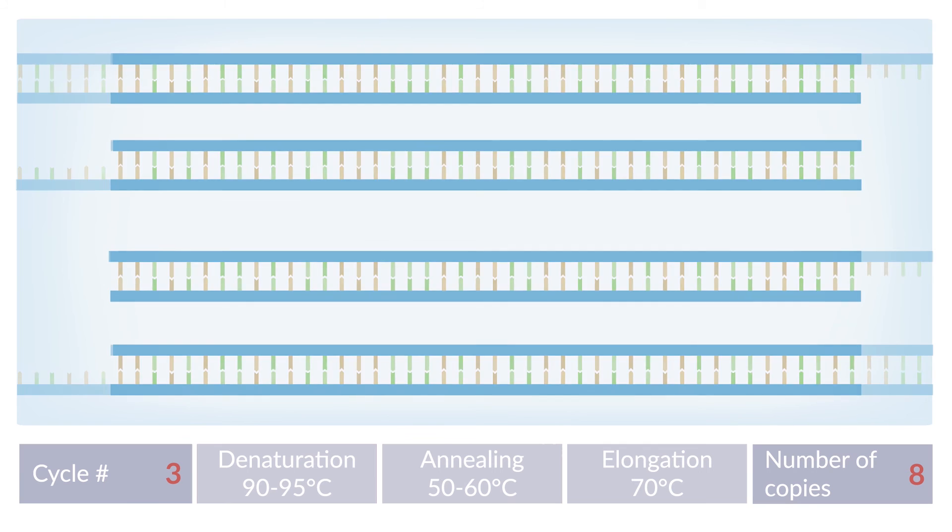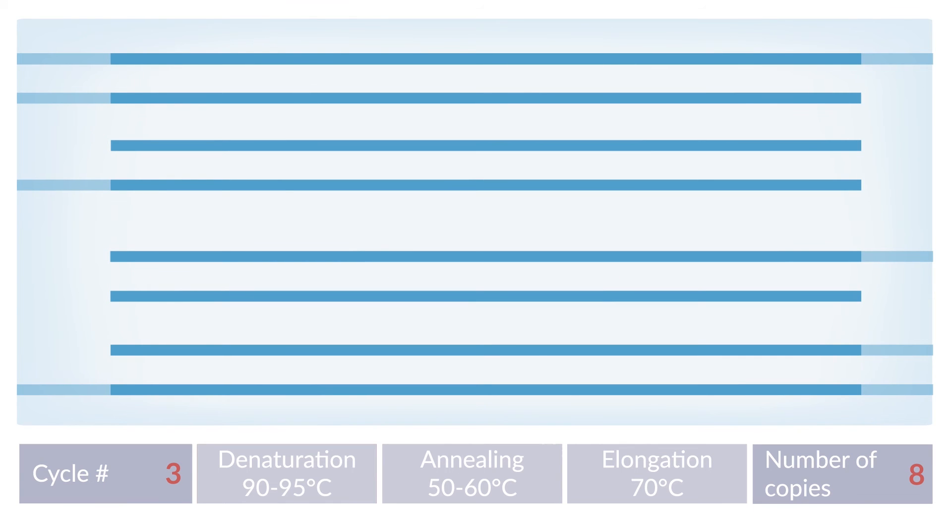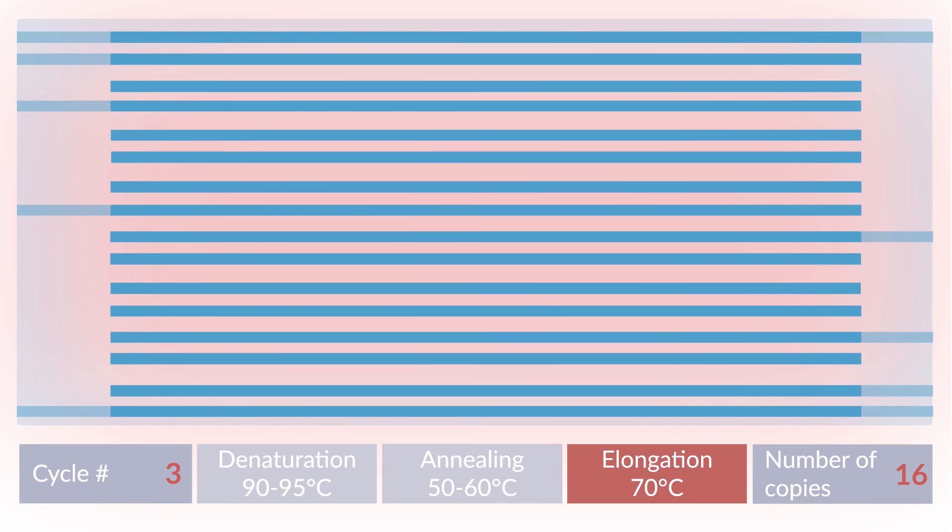In the third cycle, the amount of DNA present doubles again by undergoing the process of denaturation, annealing, and elongation.